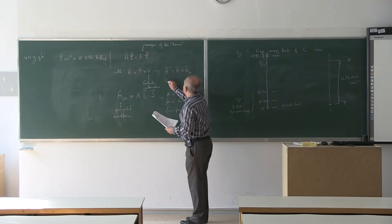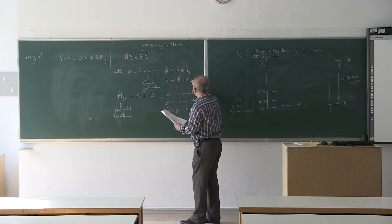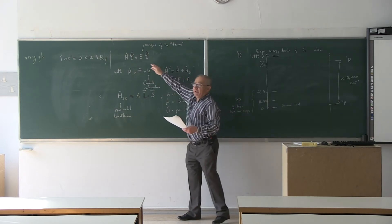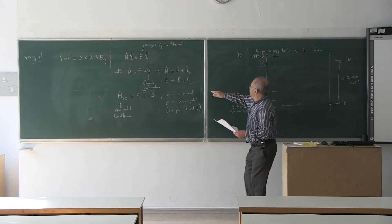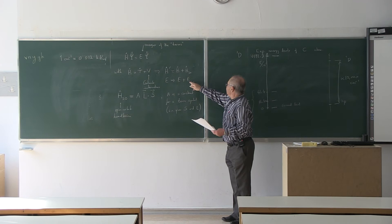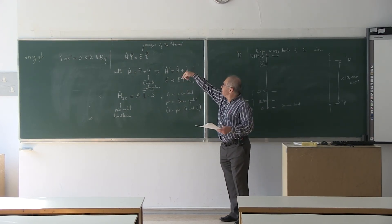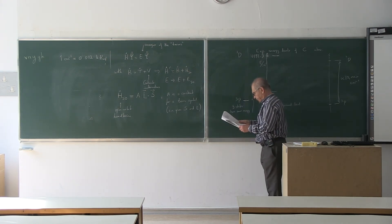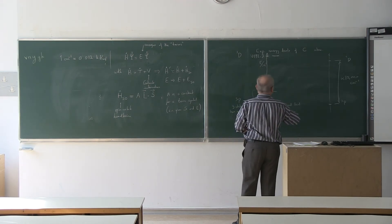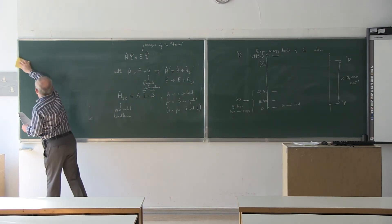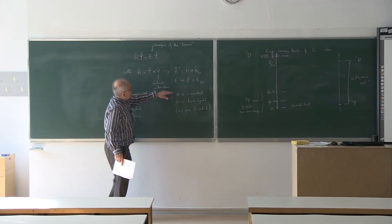A is a constant for a given term symbol — meaning for given S and L values. For the triplet P term, S = 1 and L = 1. Including this spin-orbit Hamiltonian H′ = H + H_SO modifies the energies, because the Hamiltonian now has an additional part — the spin-orbit interaction — which adds a correction to the original energy E.